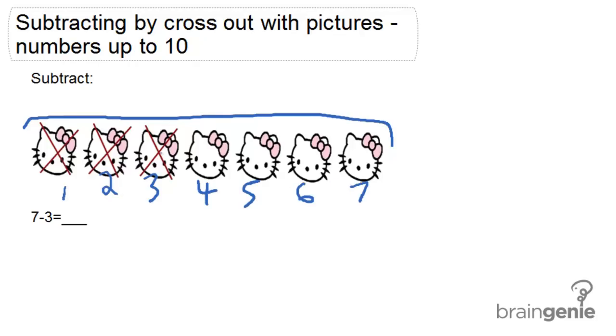And we're taking away 3. So we're crossing out 3 of the cats, or taking away 3.